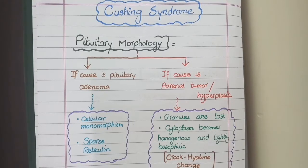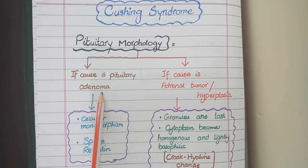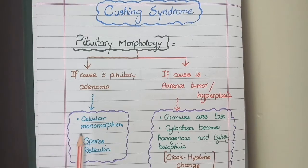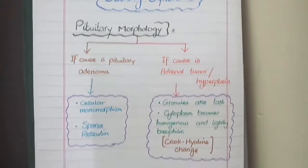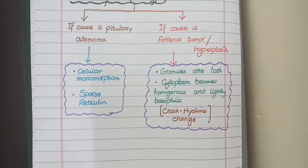In the pituitary, there can be one of two types of changes depending upon the cause. If the cause of Cushing syndrome is a pituitary adenoma, there will be cellular monomorphism instead of admixtures of cells, and the reticular network will be sparse. If the cause is an adrenal tumor or hyperplasia, the steroid released from the adrenal glands will signal the pituitary to stop secreting ACTH hormone — this is called feedback inhibition.